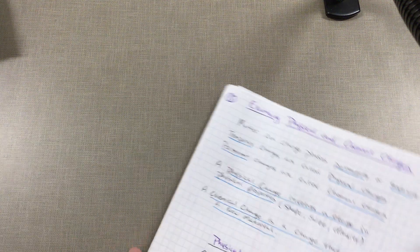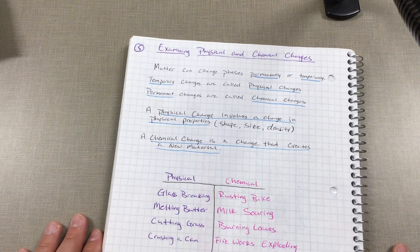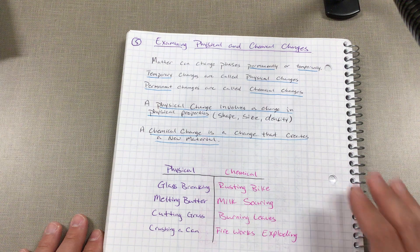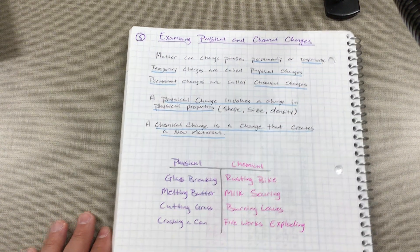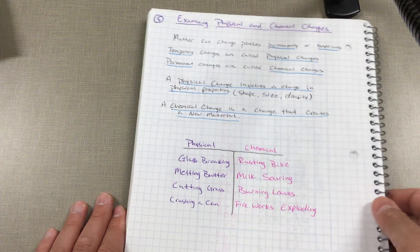We examined the differences between physical and chemical changes. How temporary changes are what we consider physical, and permanent changes that we consider chemical. We've also listed examples of both.